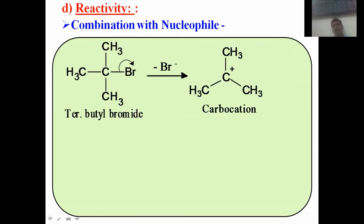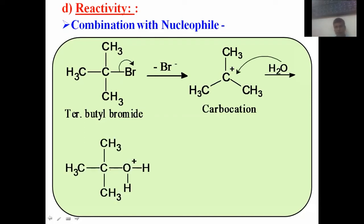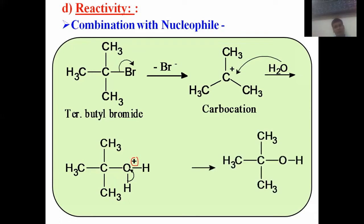We get the carbocation intermediate. In the next step, a nucleophile — suppose a water molecule — attacks the central carbon, forming a bond between carbon and oxygen. Then there is a loss of H⁺, and we get the corresponding tertiary butyl alcohol. This is just combination of the nucleophile with the carbocation, and the overall process is unimolecular nucleophilic substitution.